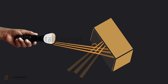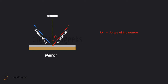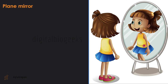The light that falls on the mirror is called the incident ray, and the ray of light reflected from the mirror is called the reflected ray. We draw a normal here. The angle between the incident ray and the normal is the angle of incidence, and the angle between the reflected ray and the normal is the angle of reflection. The angle of incidence is equal to the angle of reflection.